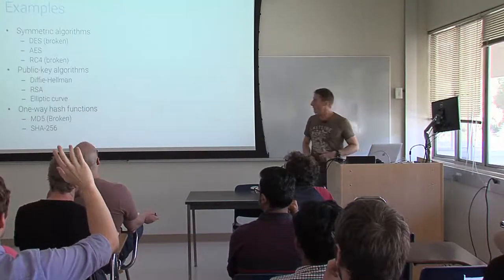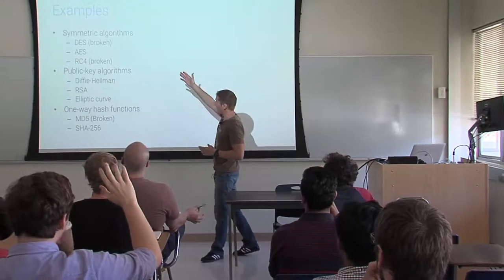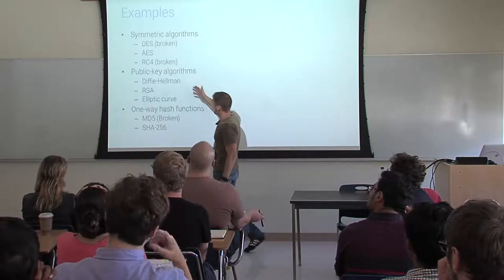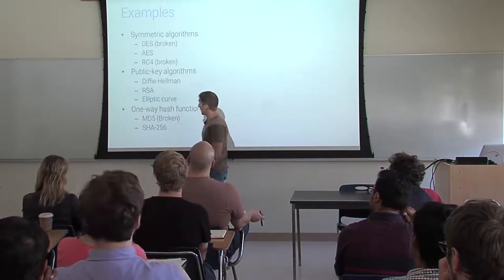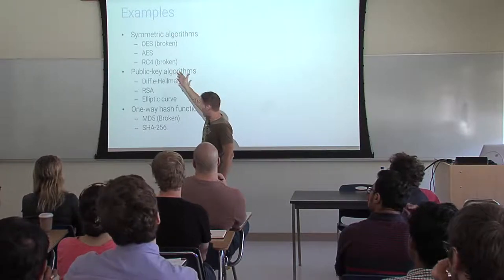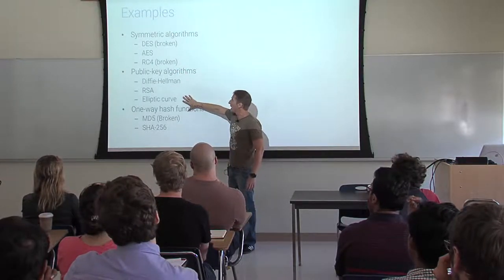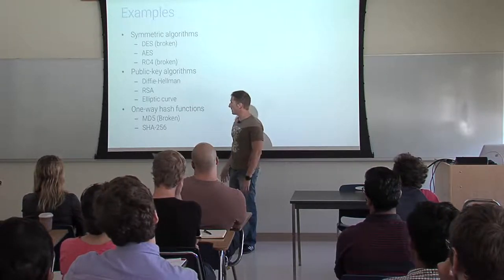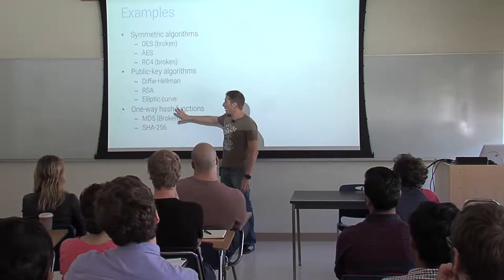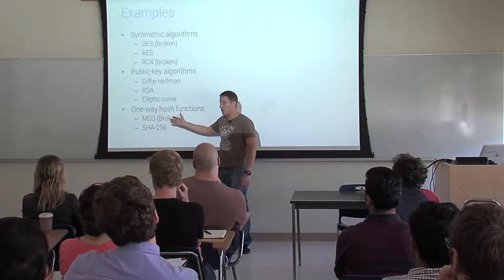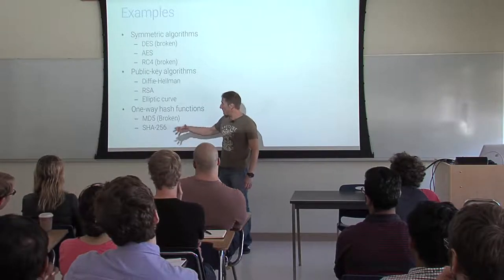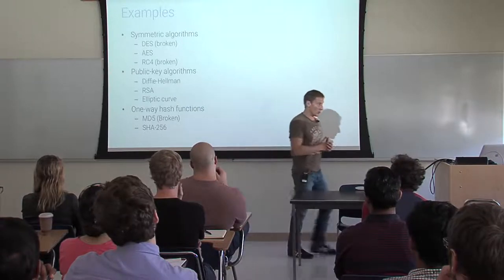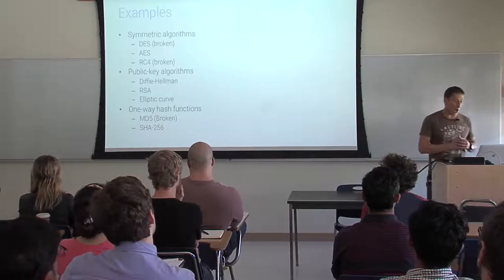They have produced a number of examples of symmetric algorithms you might know: DES, which is now considered broken; RC4, also considered broken; and AES, which is the current standard for symmetric algorithms. Then we have public key algorithms like Diffie-Hellman, RSA, and elliptic curve-based algorithms. For one-way hash functions, we had MD5 for a long time, which is now considered broken in many uses. And SHA-256, which is what's commonly used today.